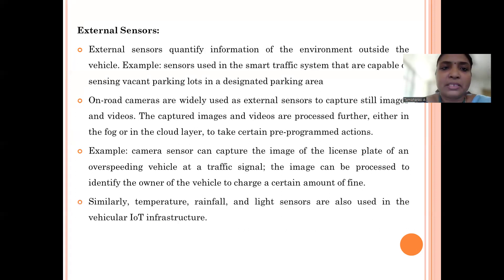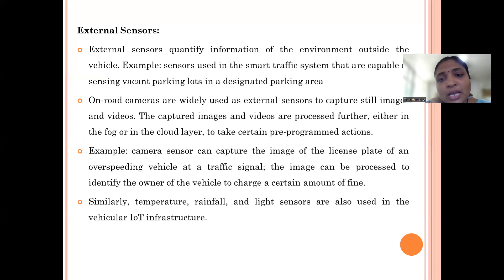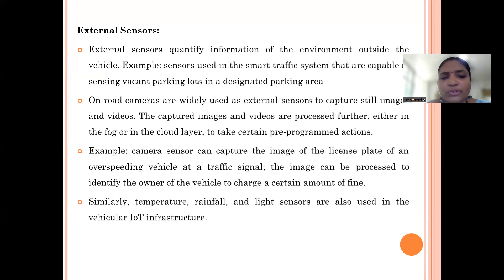External sensors help you sense information outside the vehicle. One example is the sensor used in smart parking systems, where the vehicle can sense a vacant parking slot and park there. On-road cameras can capture still images and videos which can be processed for making decisions. You can also use light sensors, rainfall sensors, and similar sensors for sensing environmental parameters outside the vehicle.